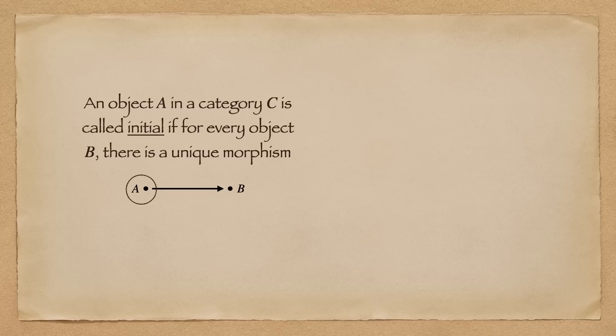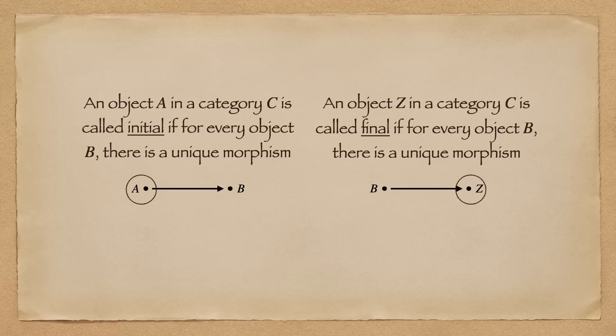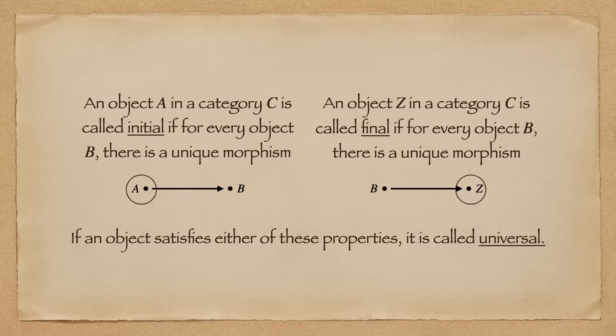An object A in a category C is called initial, if for every object B, there exists a unique morphism from A to B. And an object C is called final, if for every object B, there is a unique morphism from B to Z. And if an object satisfies either of these properties, it is called universal.